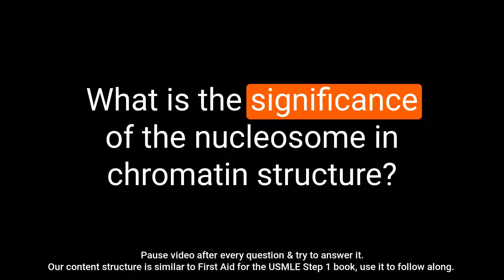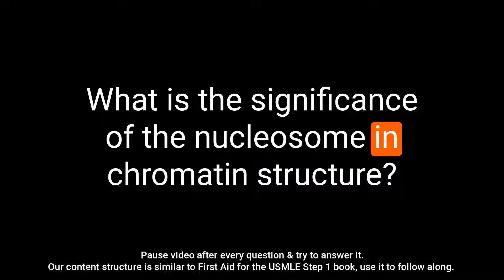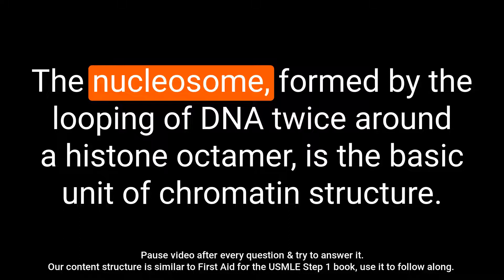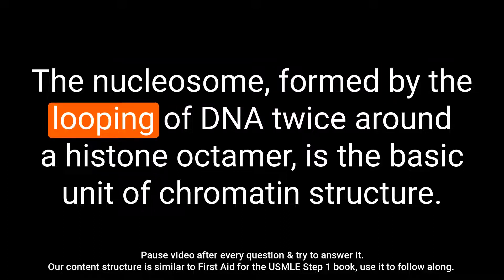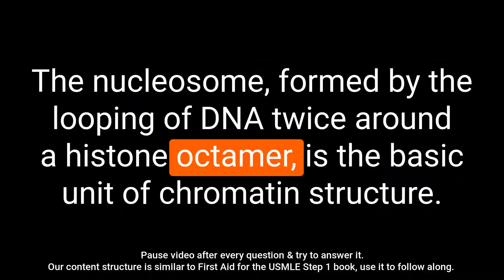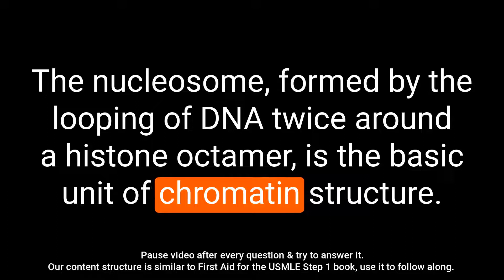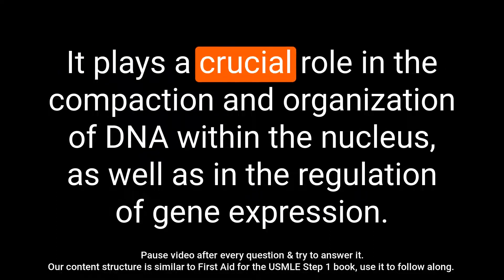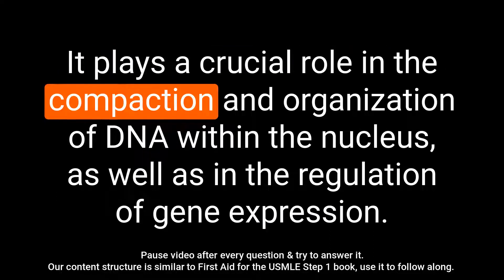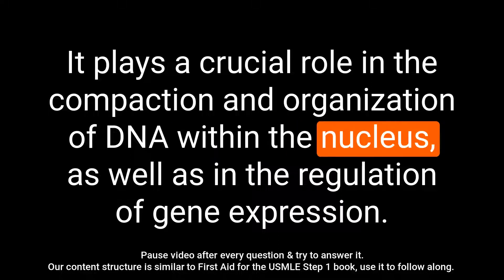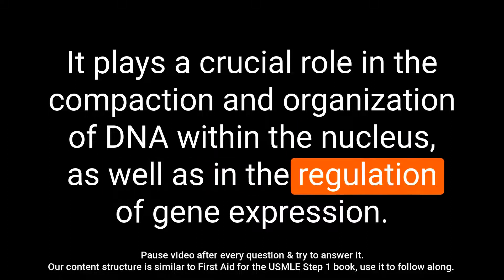Question: What is the significance of the nucleosome in chromatin structure? Answer: The nucleosome, formed by the looping of DNA twice around a histone octamer, is the basic unit of chromatin structure. It plays a crucial role in the compaction and organization of DNA within the nucleus, as well as in the regulation of gene expression.